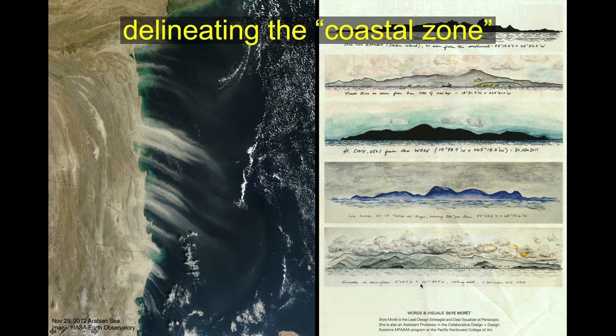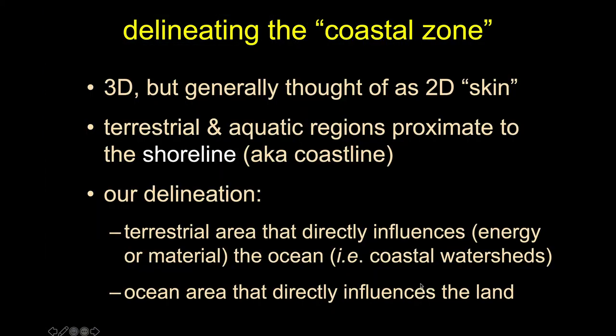On the right is artwork showing the same location seen through different lenses — the idea that when we think of the coast, we can imagine different factors and different layers. The coastal zone is three-dimensional, but in a practical sense, when we're talking about planning or management policy, we often default to thinking of it as a two-dimensional skin. But it is three-dimensional — we have air masses, water masses — these things are very real world here.